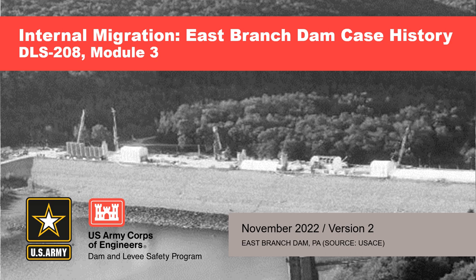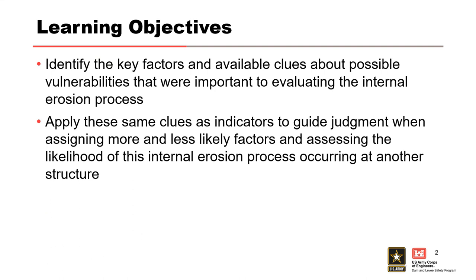This presentation is the East Branch Dam case history, where internal migration resulted in a dam safety incident and eventually led to the installation of a cutoff wall to reduce the risk. The objective is to identify the key factors and clues about possible vulnerabilities important to evaluating internal migration. You can then apply these same clues as indicators to guide judgment when assigning more and less likely factors and assessing the likelihood of internal migration at other structures.